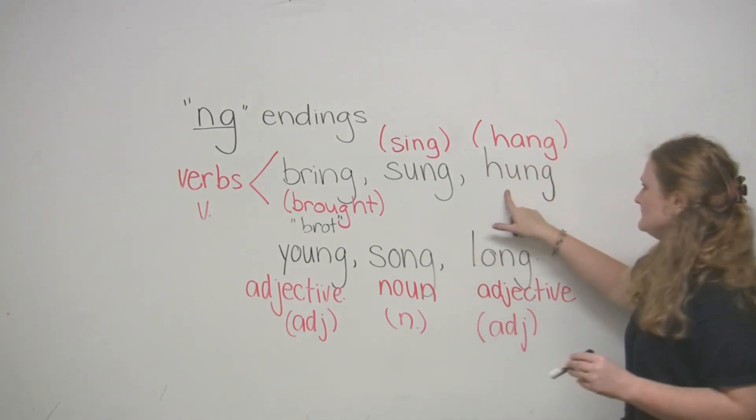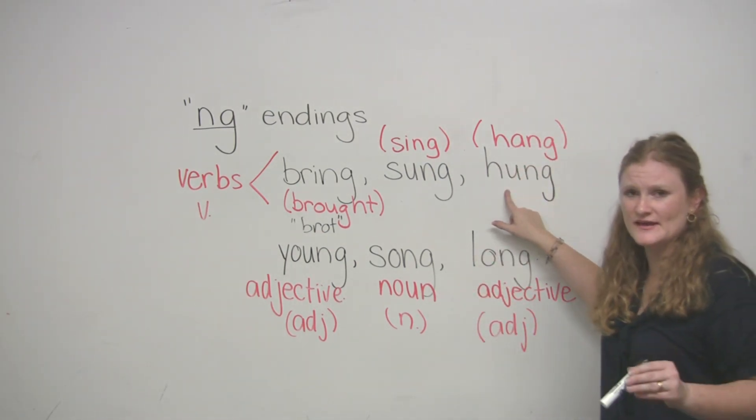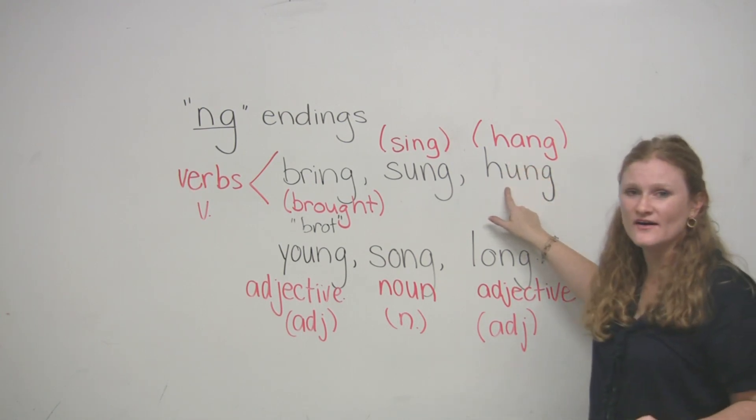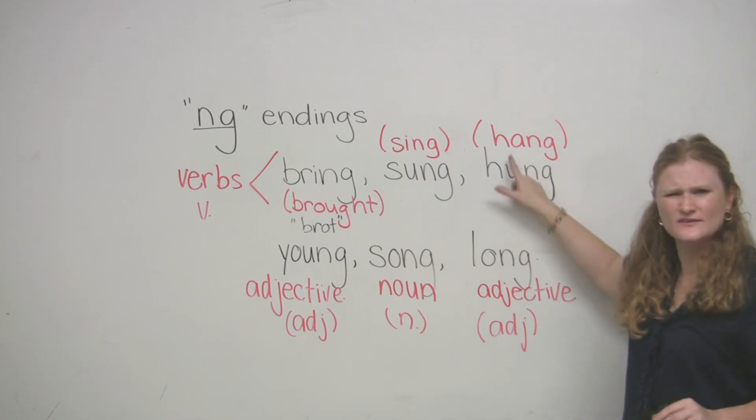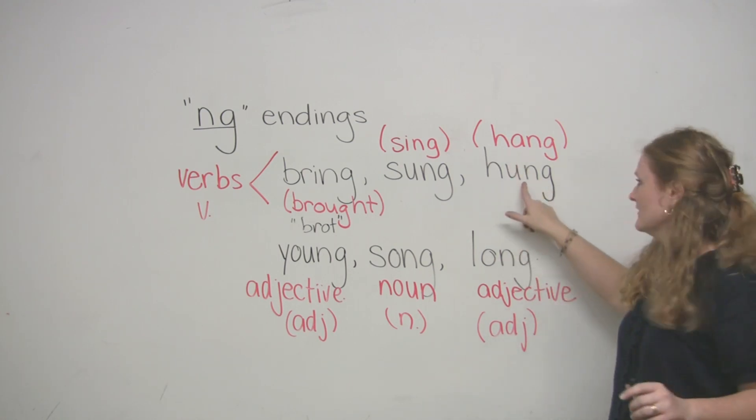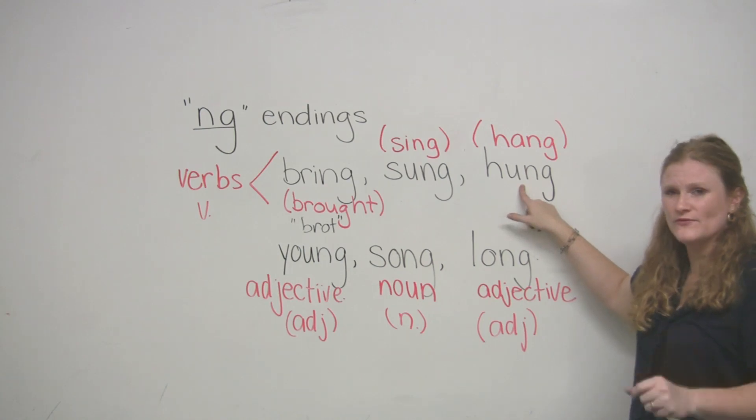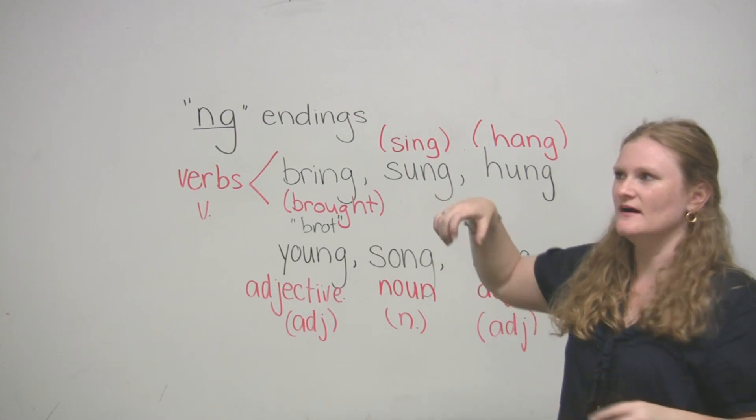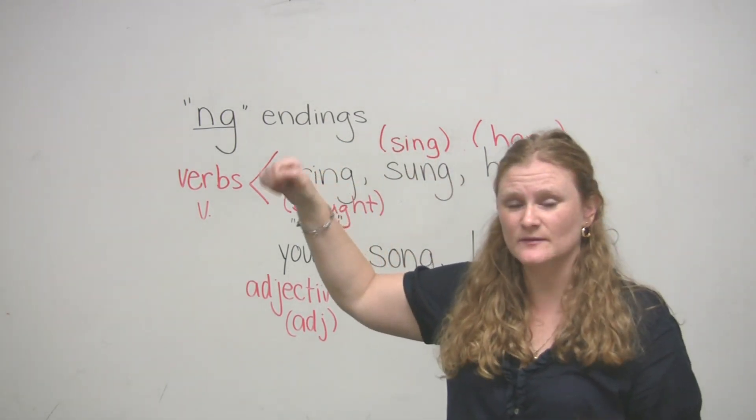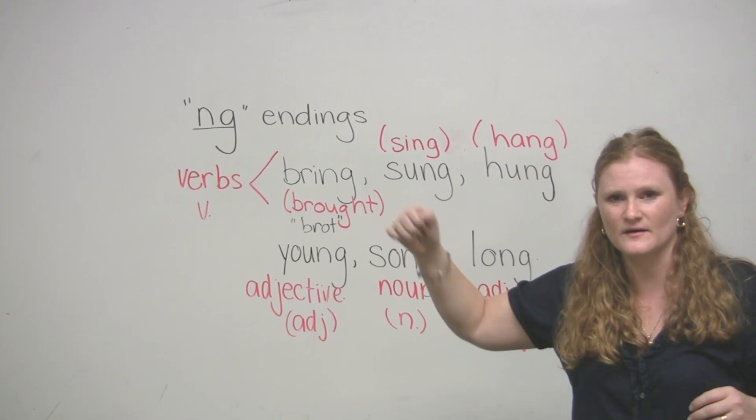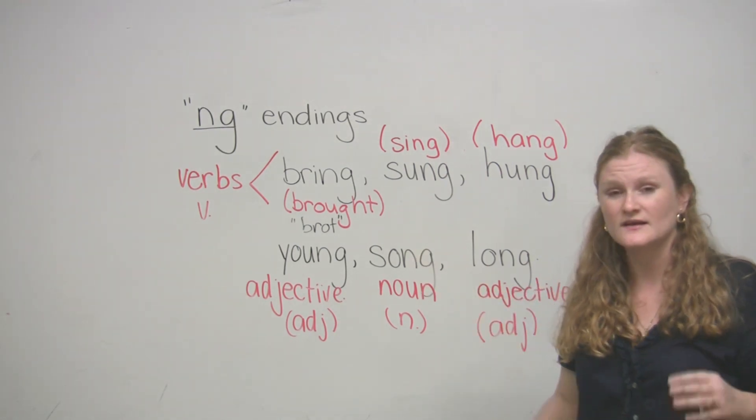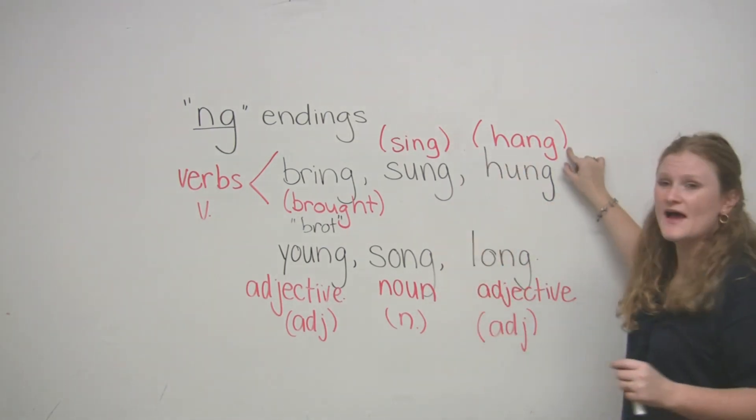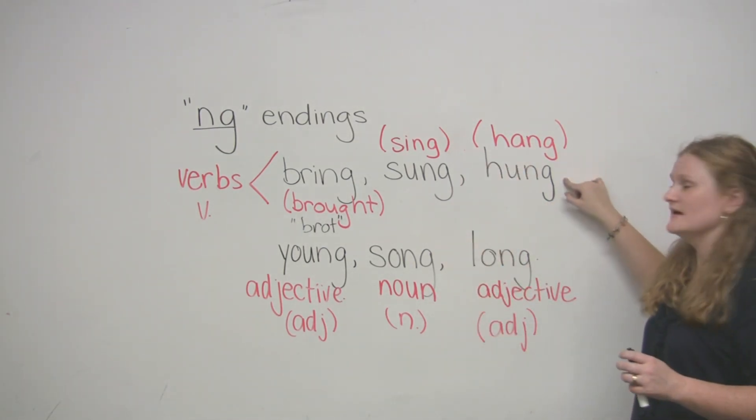Try this one next. The past tense of the word hang is hung. Does anyone know what this word means? Hang or hung? It means to put something up so that it dries. You can hang up your clothes, or you've actually hung up your clothes in the past tense. It means to suspend something in the air. So we have hang and hung.